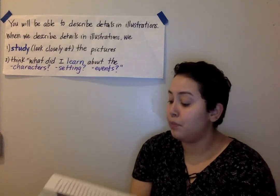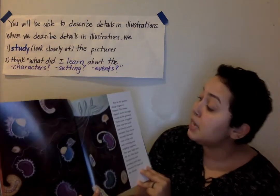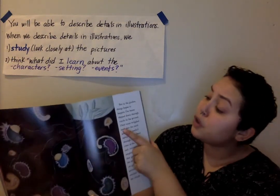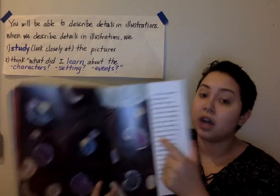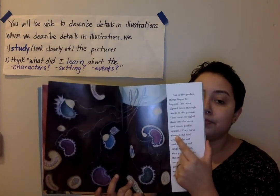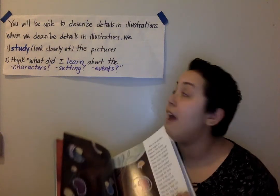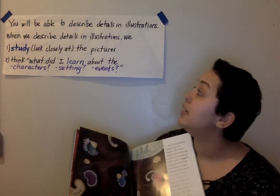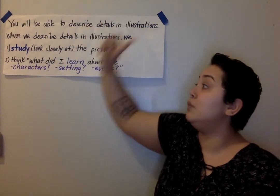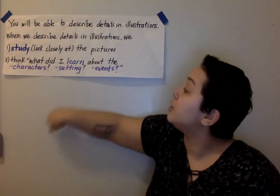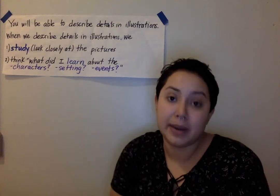Now when we left off, we heard that the beans were starting to grow — that their roots were wrinkled deep into the earth and shoots pushed upwards. Now we're going to continue reading where we left off yesterday and look closely at the details in the illustrations to see what we learned about the characters, setting, events, or anything else in our text.